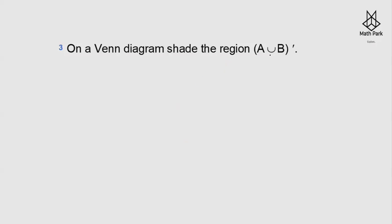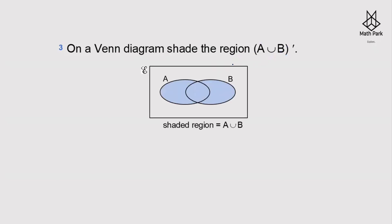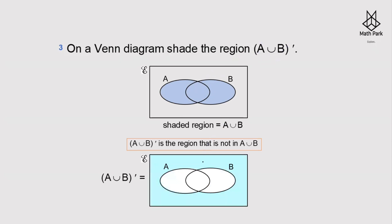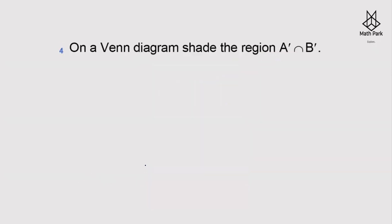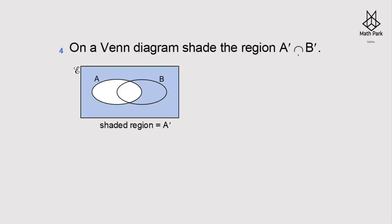On a Venn diagram, shade the region (A∪B)'. A∪B is the combined region of A and B. The complement of A∪B is everything that is NOT in A∪B — so excluding that shaded region, the rest is (A∪B)'.